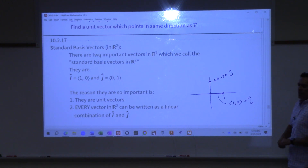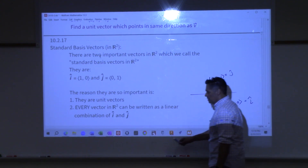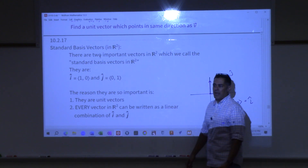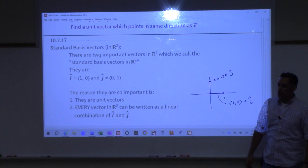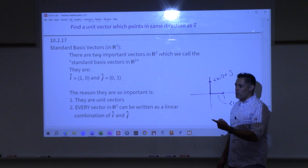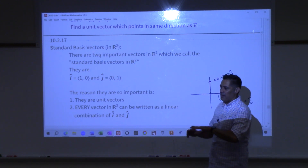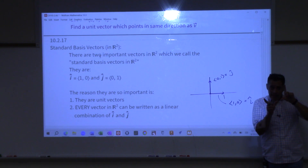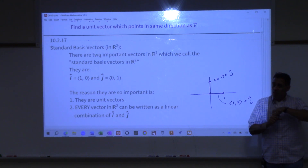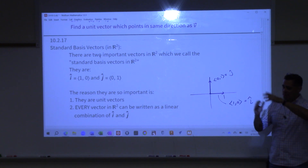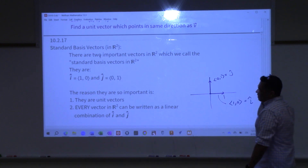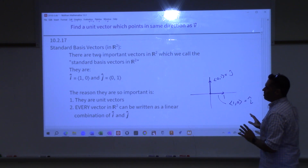These two vectors — in linear algebra you learn that these are called standard basis vectors. They form an orthonormal basis for the space because they are vectors that are normal, meaning they have unit length, and they are orthogonal to one another. They form a basis because they span the entire space. Here, we're not going to go that deep into it.